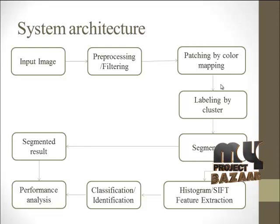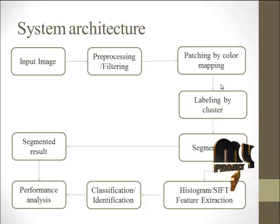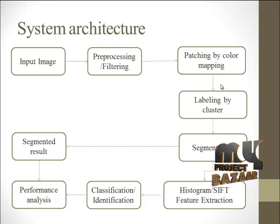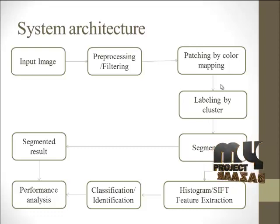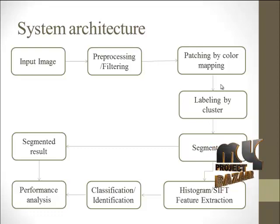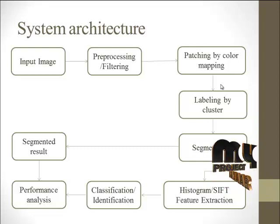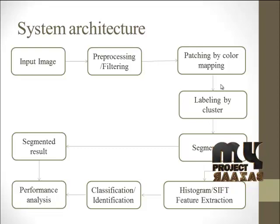Before processing, we apply preprocessing first. Preprocessing involves filtering of the image, as an image may contain salt and pepper or other noises. For noise removal, we apply a filtering process — that is called preprocessing. Our proposed method is then implemented, called patches and labeling. Initially, patches are based on color mapping and labeling is based on clustering.